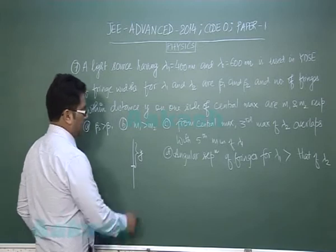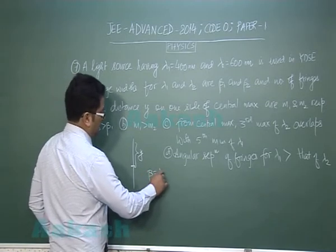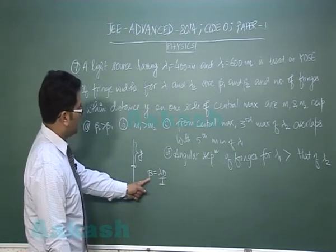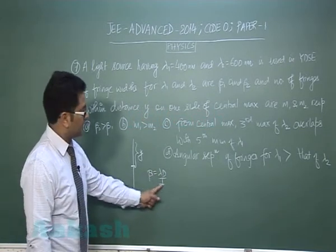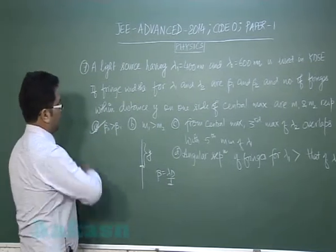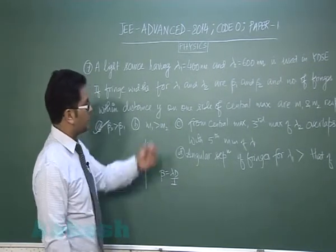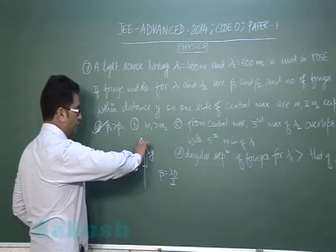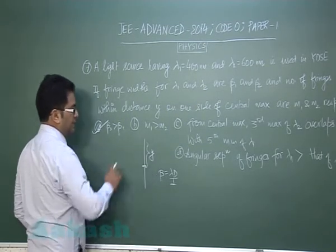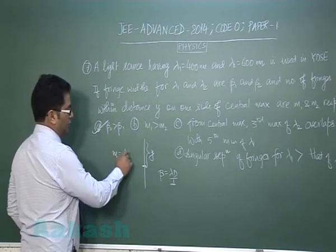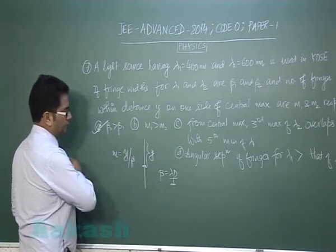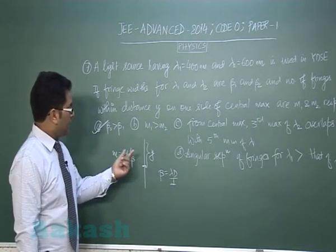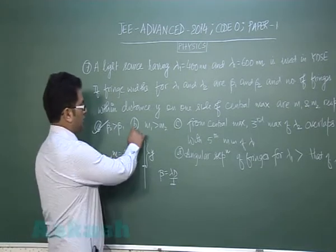The fringe width is lambda times D divided by d, so higher lambda gives greater beta. Therefore for option A, beta2 is greater because lambda2 is higher — that is correct. Likewise, m is the number of fringes within distance y, so m equals y divided by beta (the fringe width), and higher fringe width gives smaller m.